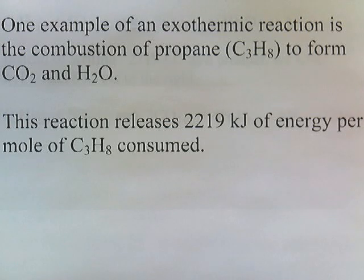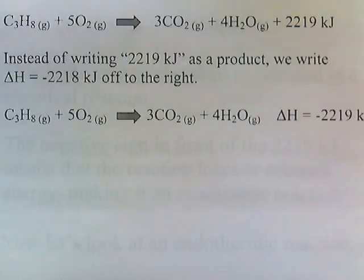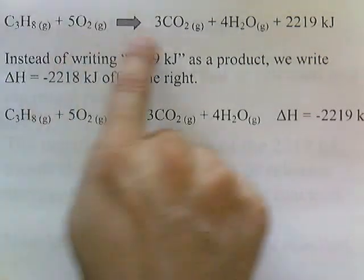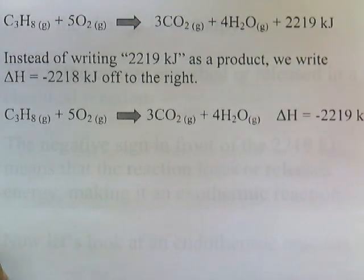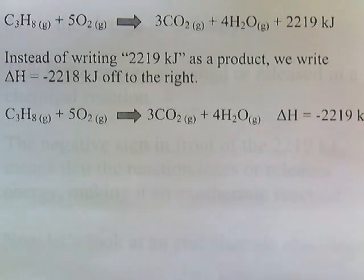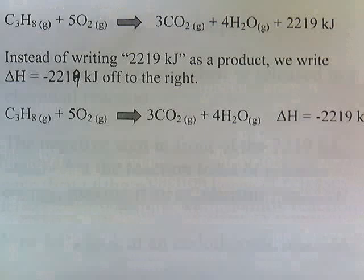One example of an exothermic reaction is the combustion of propane, C3H8, to form carbon dioxide and water. This reaction releases 2,219 kilojoules of energy per mole of C3H8 consumed. Propane reacts with oxygen to form carbon dioxide and water, and one of the products of the reaction is energy. Now instead of writing 2,219 kilojoules as a product, we write delta H equals negative 2,219 kilojoules off to the right.